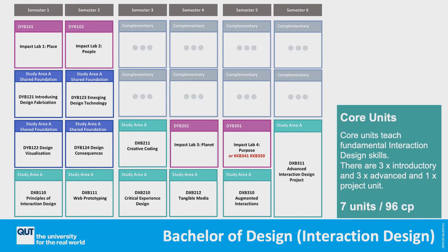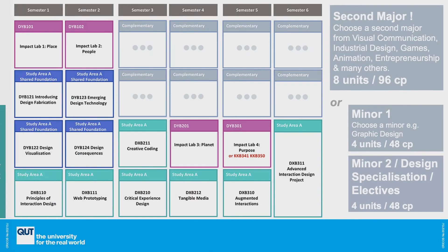The core units in the Interaction Design degree teach fundamental Interaction Design skills. Note the capstone unit in your final semester — this is a great opportunity for you to develop something for your portfolio, to launch you into your next step, industry or further study like research. For your complementary studies, you can actually fit in another full major. Interaction Design is the only design degree where you can do that, so you could look at Industrial or Fashion or Visual Communication as an extra major. We're looking forward to seeing you in class and growing the Interaction Design field.